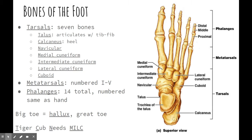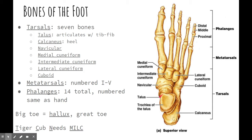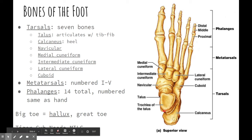Then we have the bones of the foot. This looks very similar to the hand, so make sure you're paying attention or you might get things mixed up. There are seven tarsal bones — just like we had carpals, these are tarsals. There are seven bones. You have the talus, which is what actually articulates with the tibia and fibula, the tib-fib. Then you have the calcaneus, which is the heel bone, and that's where your calf muscle attaches down onto.